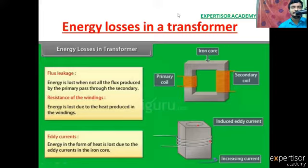In this transformer we have three parts: the primary coil, iron core, and secondary coil. Look at here, this is the primary coil, this is the secondary coil, this is the iron core.